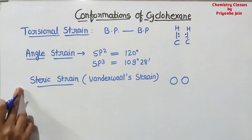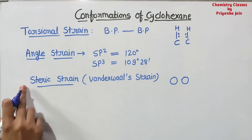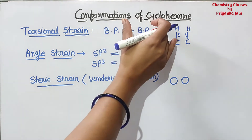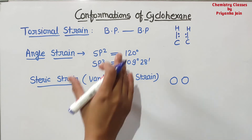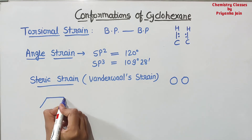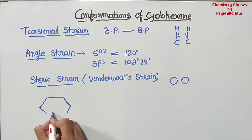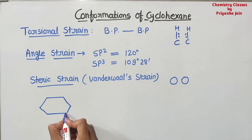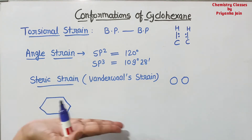So three types of strain can be present in a molecule. Now, if we are talking about cyclohexane — cyclohexane is a cyclic structure. It was assumed that it is a planar structure, meaning this ring is in a plane.